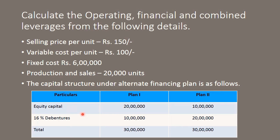We have equity capital and debentures at the rate of 16%. So the interest element should be calculated at 16% of the debenture values. In Plan 1, equity capital is 20 lakh rupees, and in Plan 2, equity capital is 10 lakh rupees. In all, the total capital will be 50 lakhs for both plans.